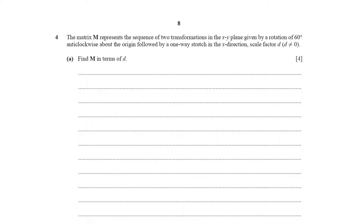Question number four: the matrix M represents the sequence of two transformations in the XY plane, given by a rotation of 60 degrees anticlockwise about the origin, followed by a one-way stretch in the x-direction with scale factor d, where d is not equal to zero. On part A, find M in terms of d.